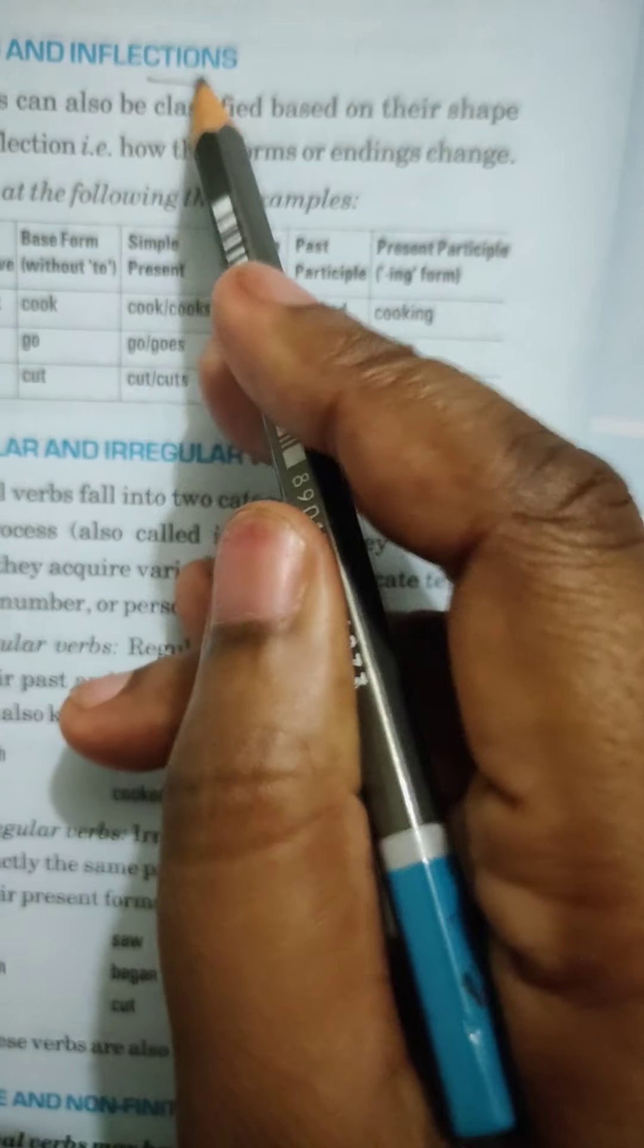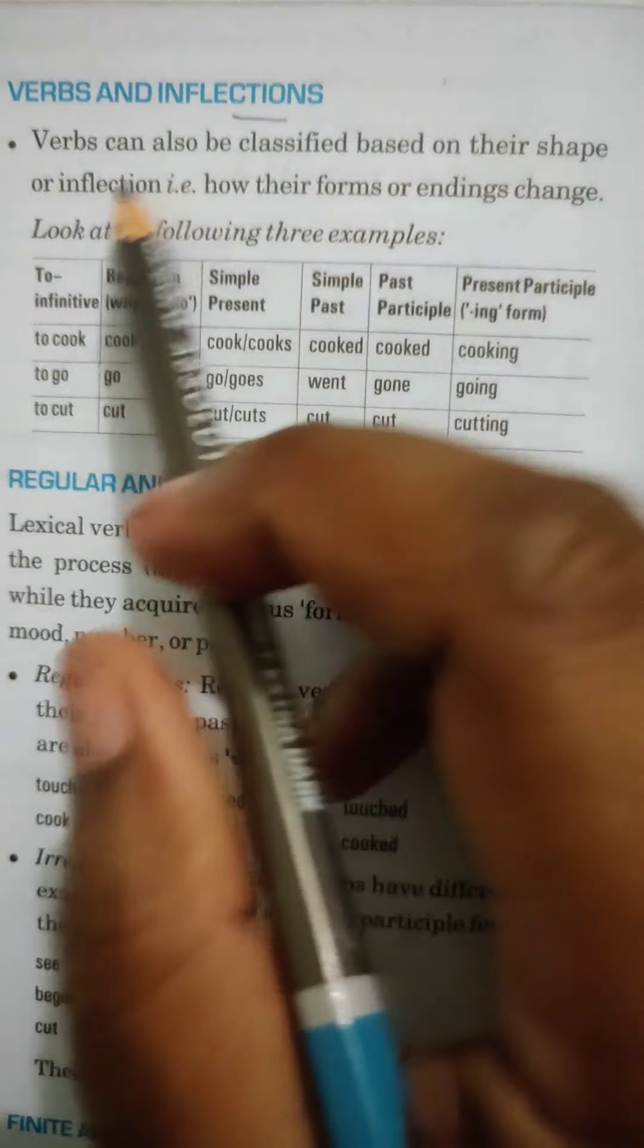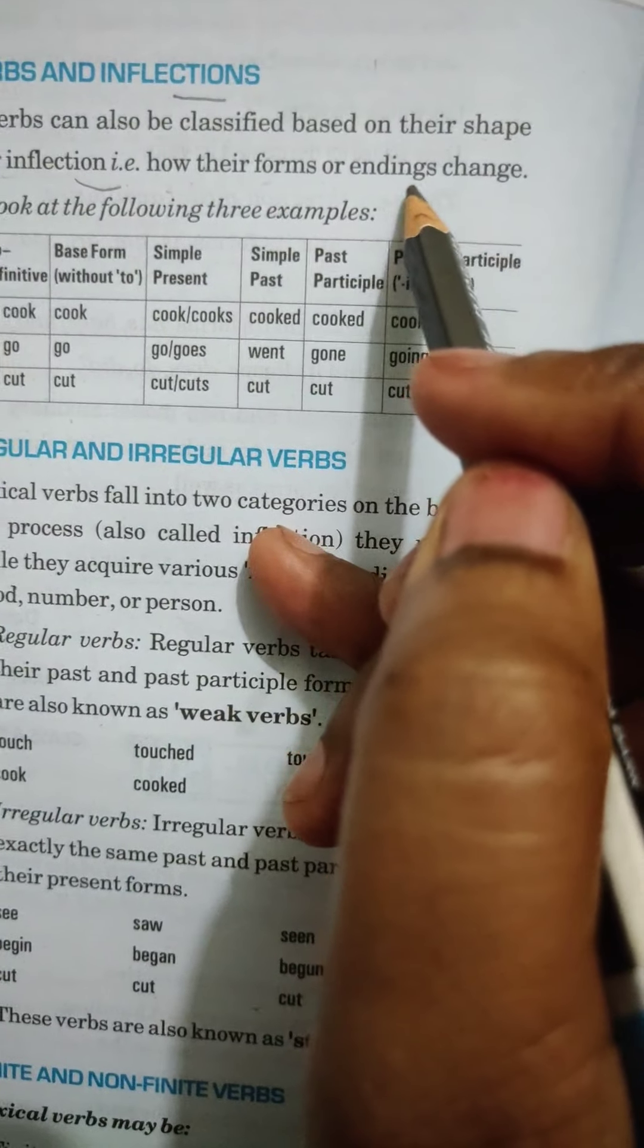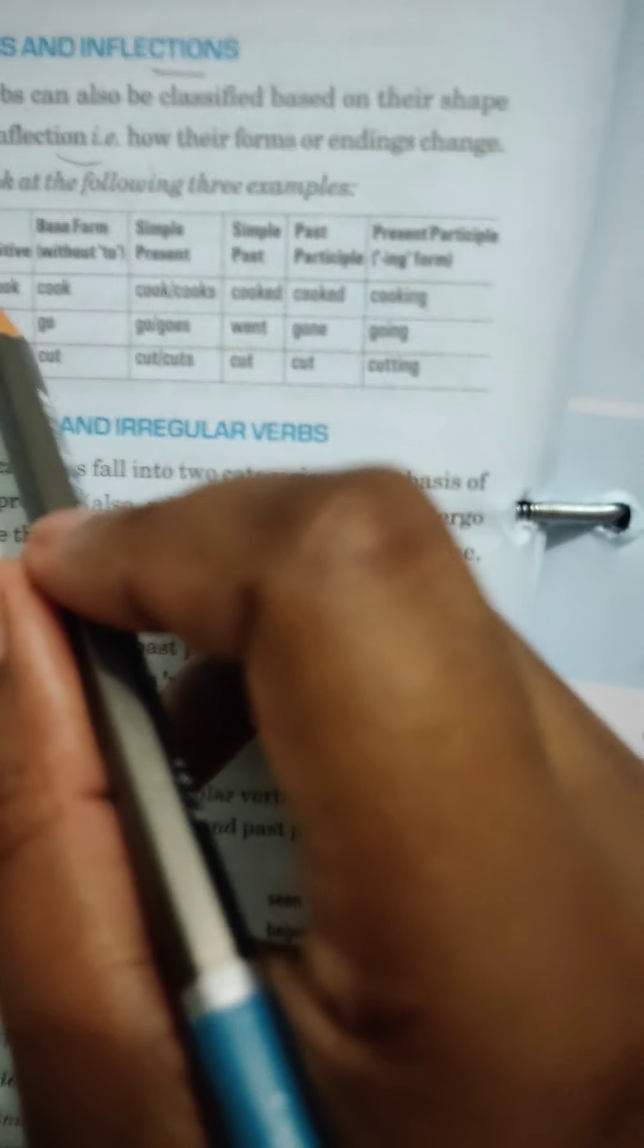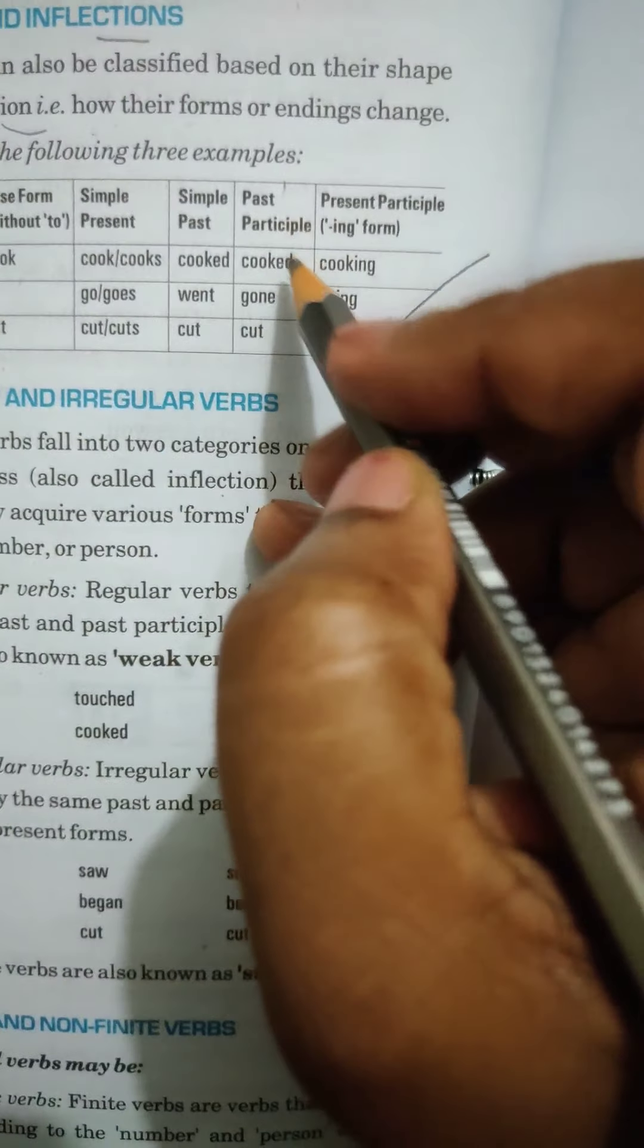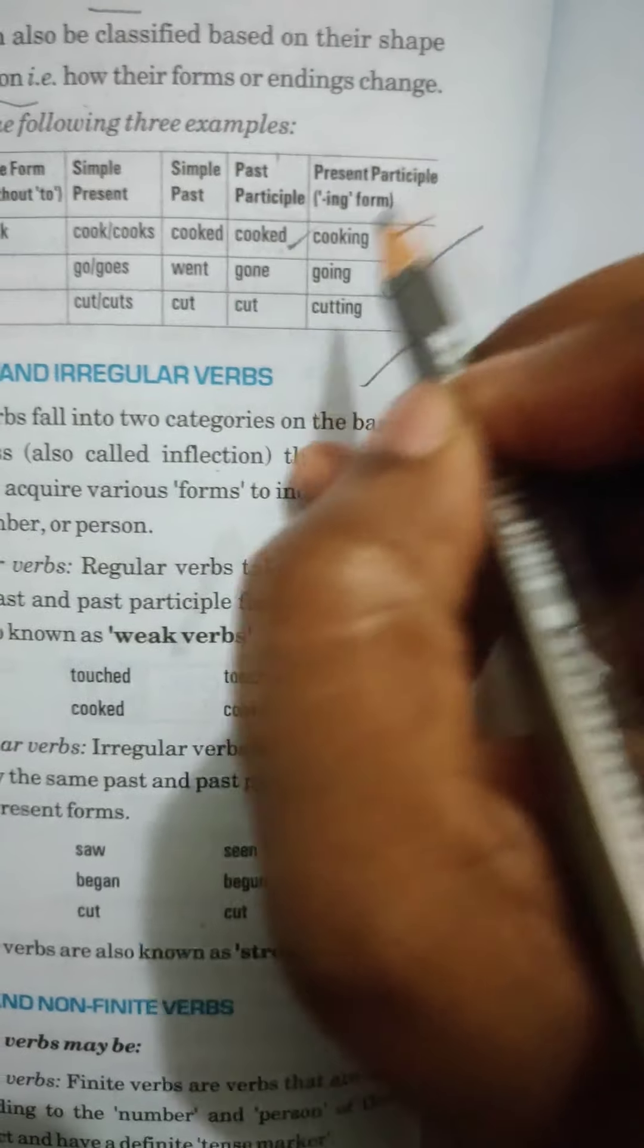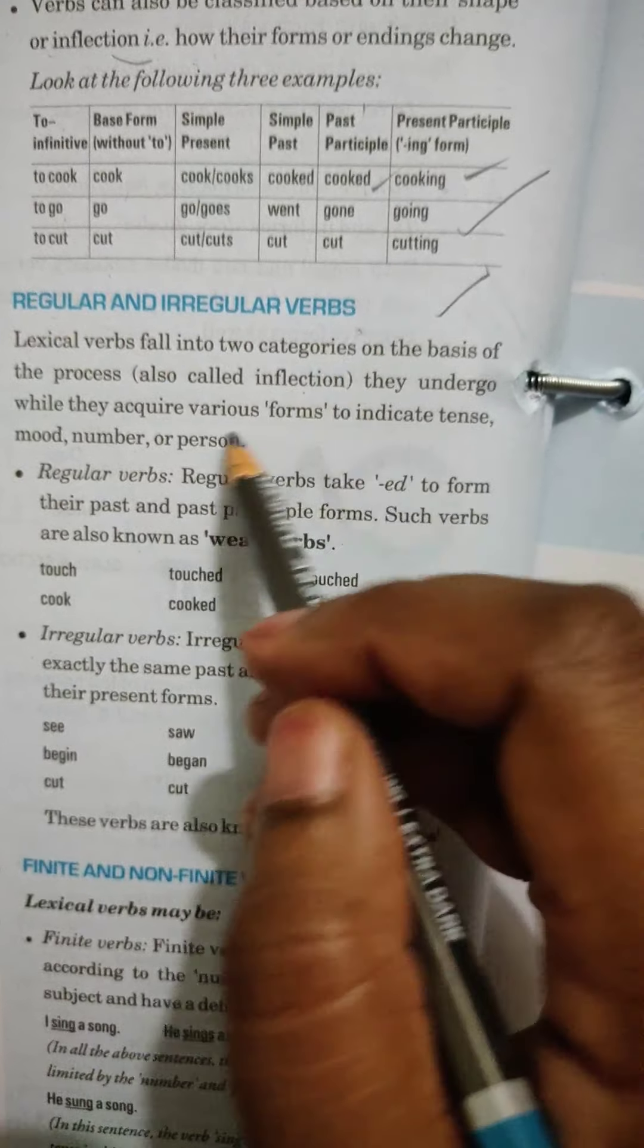Now, verbs and inflections. Verbs can also be classified based on their shape or inflection. Like how their forms are ending changes. Like if you see infinitive to cook, base form is cook, simple, present, cook, cooks and this box you need to learn. Past participle will be cooked here and present participle will be cooking here. And after that you are getting regular and irregular verbs.